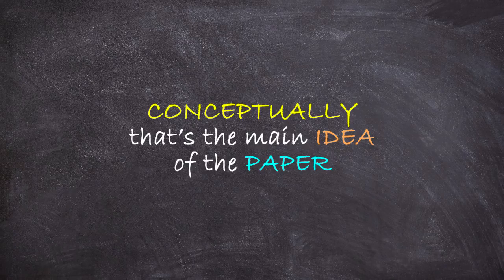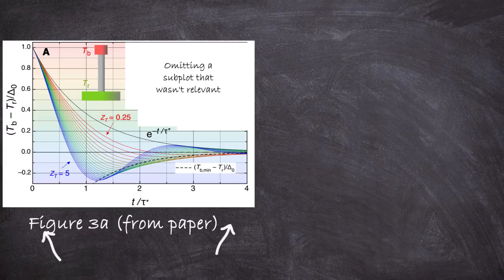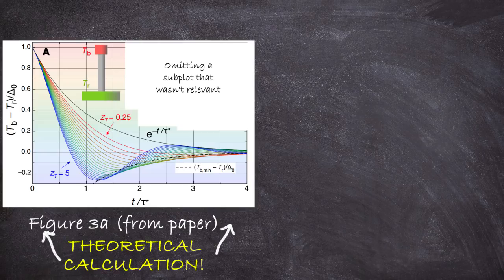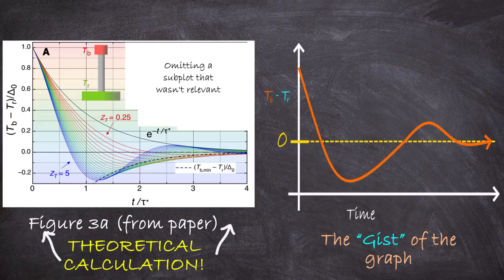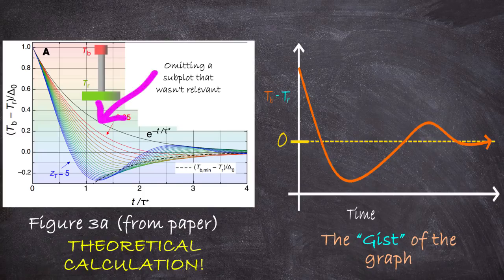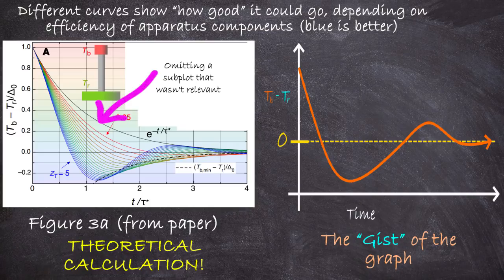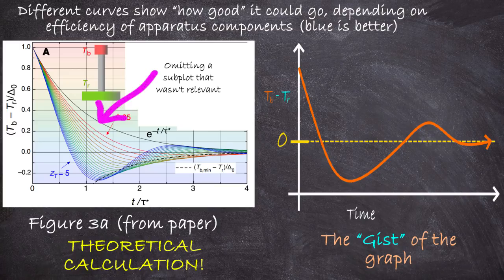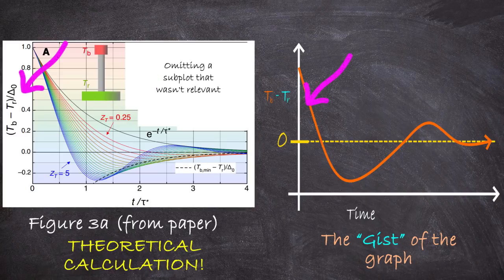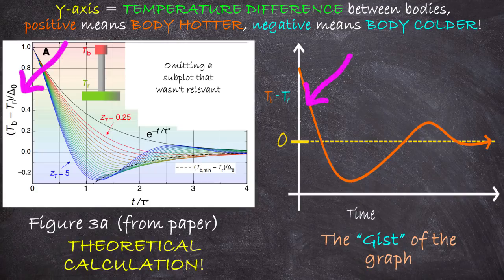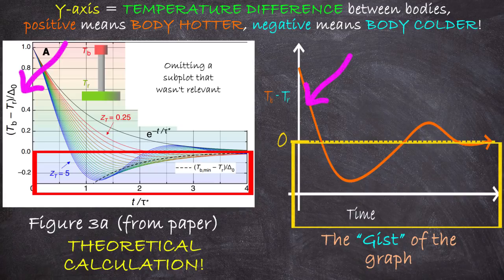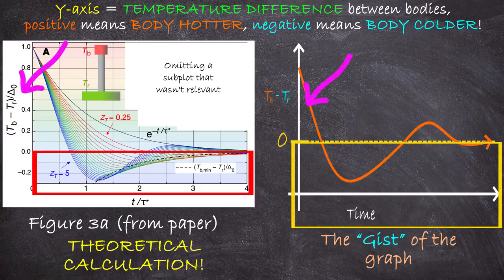Let's actually just look at two plots from the paper. The first one on the left is a theoretical plot of what the expected behavior should be that they engineered in their system. The different curves, by the way, basically just relate to what they expect depending on how performant or efficient they're able to make their system. But basically, the more blue the curve corresponds to having more and more high quality and efficient components in their setup. But the key point here is the y-axis, which shows the difference between the temperature of the body and the reservoir. So when the y values are negative, that means that the body is actually colder than the reservoir at that point.